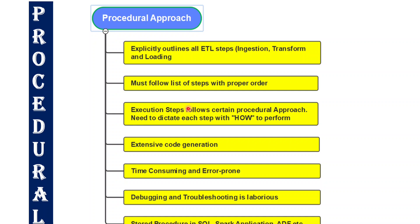In the procedural approach, we keep some output in mind — we know what kind of output we need. But along with what we want, we also have to define how we can achieve that output. For each and every step we create logic describing how we can achieve the final output. So in procedural approach the keyword 'how' is more important. Each and every step has to be manually dictated through our logic.